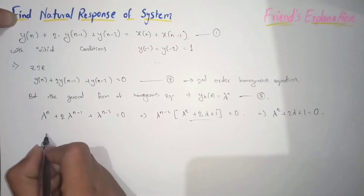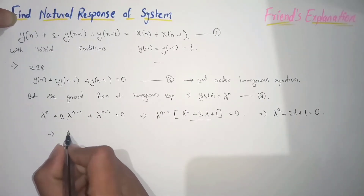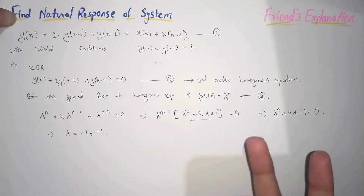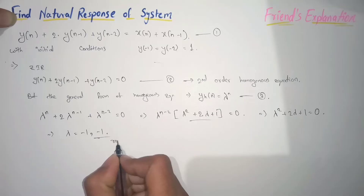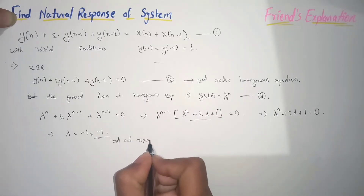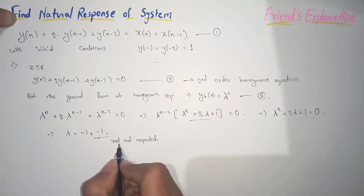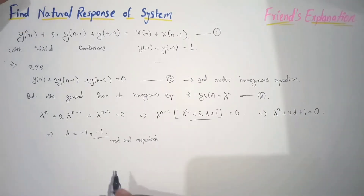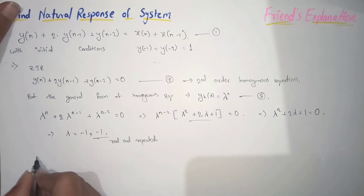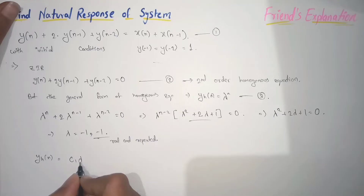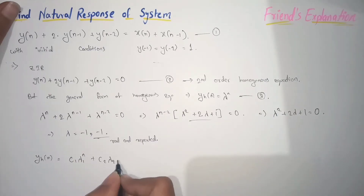When we solve this equation we get roots of lambda as -1 and -1. That means we have two roots which are real and also repeated. Since the roots are real and repeated, we write the homogeneous equation as: y_h(n) = C1·lambda1^n + C2·n·lambda2^n.